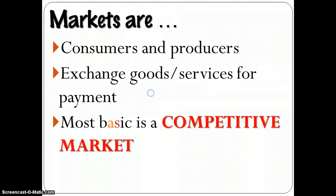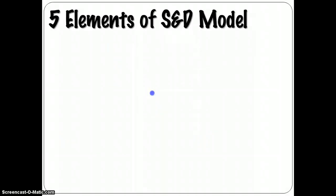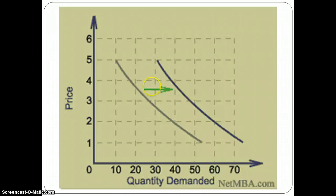Within a competitive market, there are basically five different elements to the model. We have a demand curve, and the demand curve is downward sloping, which tells us that as prices drop, we'll want more of the good, and as prices go up, we'll want less of the good.